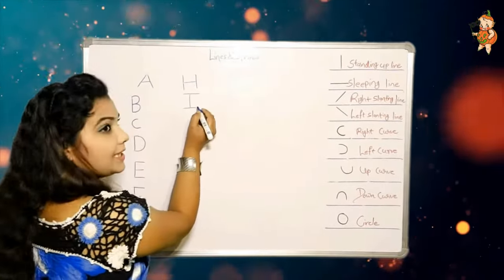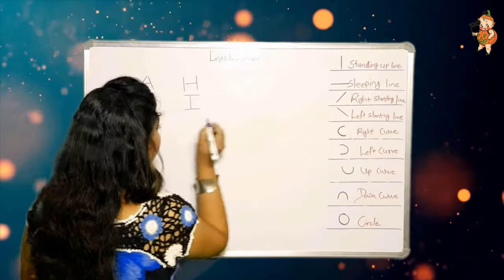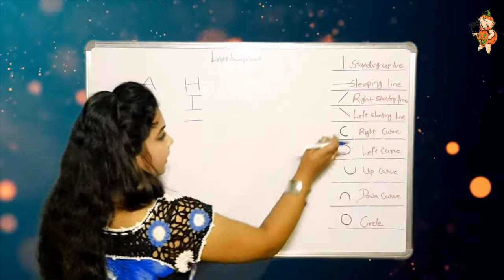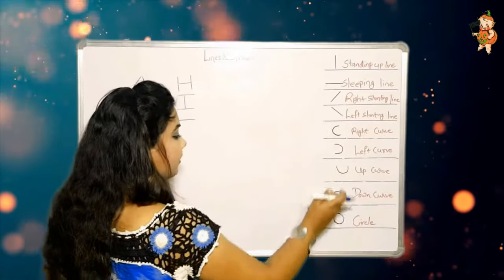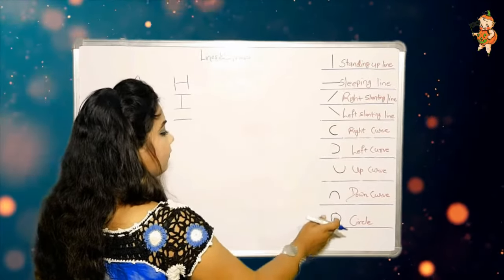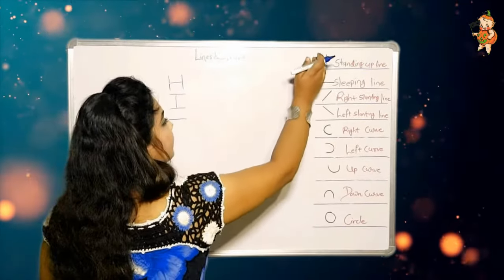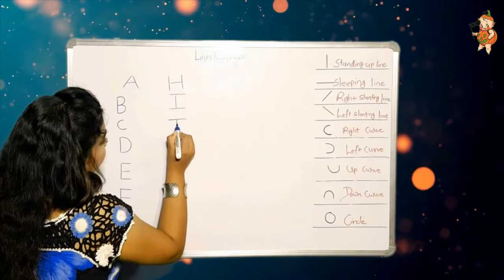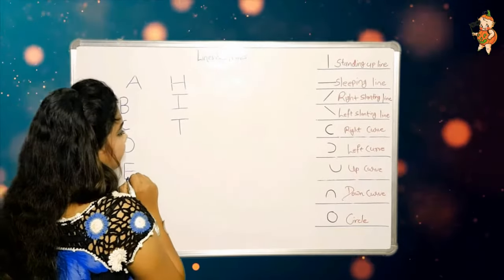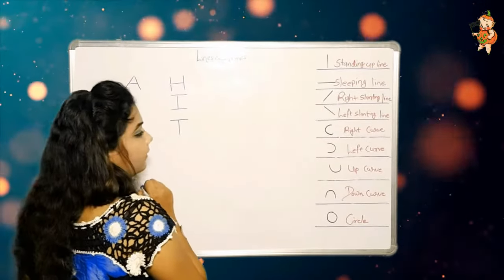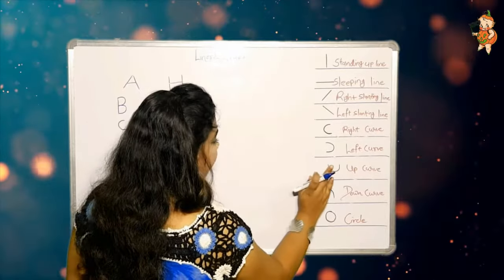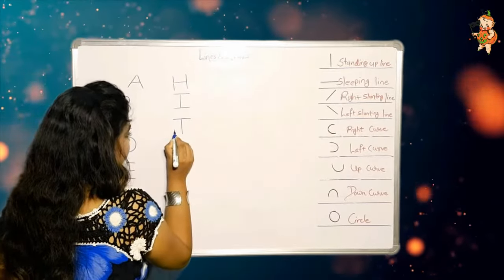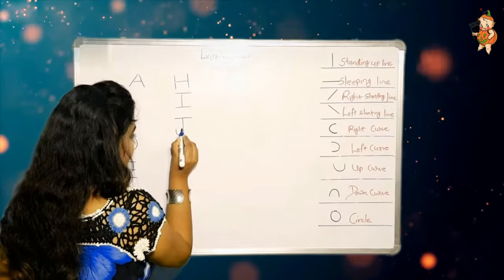How to make J? One sleeping line, one standing up line, and one up curve.